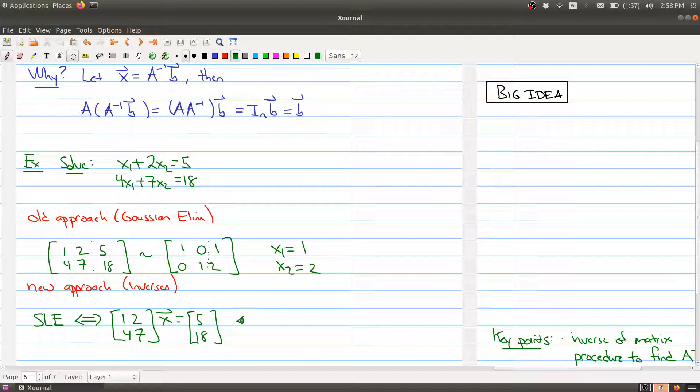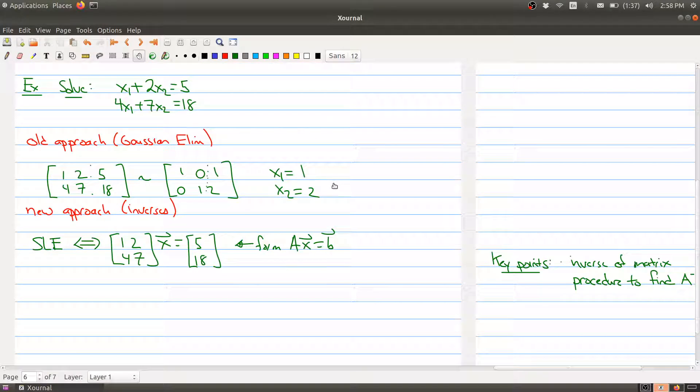All right, so we have it in now the form A x equals b. And as I pointed out earlier, this matrix here actually appeared twice in today's lecture. And we found its inverse in two different ways. But just let me recall what it is. So the inverse of this matrix we computed was negative 7, 2, 4, minus 1.